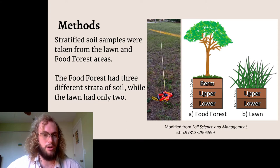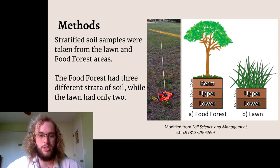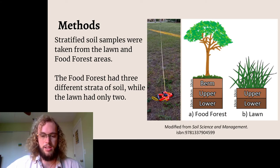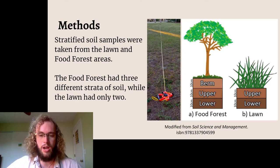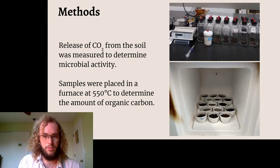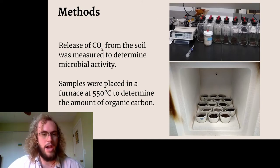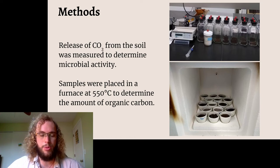With my meter tape, I set up some transects in the lawn and in the food forest and used a coring device to take soil cores at regular intervals. I divided the soil into different strata based on its depth. However, there was a difference between the food forest and the lawn because the food forest has had additional berm layers built up on top of the normal soil that was already there, so the food forest has slightly deeper soil overall than the lawn. Once I had the soil, I took them back to Dr. Oberle's lab. You can see in the top photo with the jars — I measured the release of carbon dioxide from individual soil samples to determine the microbial activity.